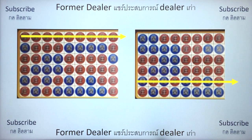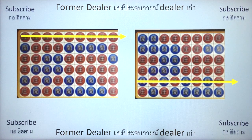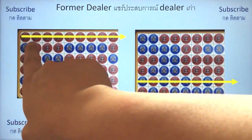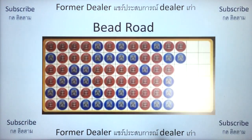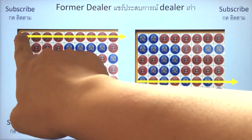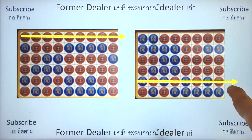I recommend — and I say this every video — only bet on the hand you are sure you're going to win. Don't bet every single hand. For one shoe, I recommend no more than 20 hands per table; ideally 10 hands per table. Maybe 20 to 30 hands for the whole night. Have a budget as well. For the Bead Road, look for a golden line or ping pong pattern.